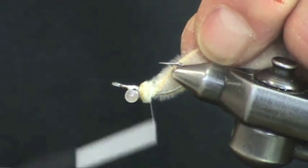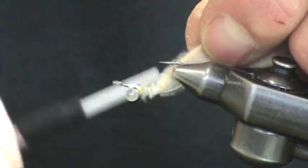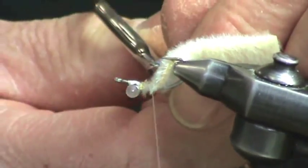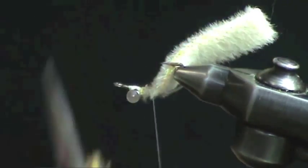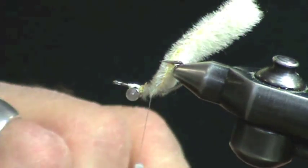Now take just a strip of foam however wide you want your finished crab to be, and tie that on just underneath the point of the tip of the hook.